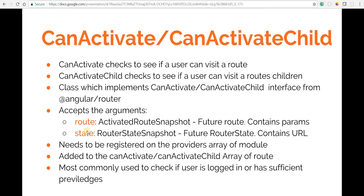The route argument is an ActivatedRouteSnapshot instance, while state is a RouterStateSnapshot. Inside these functions we'll have logic that returns a boolean, or an observable or a promise wrapping a boolean. This boolean decides whether the user can navigate to a particular route, whether it's a parent route or a child route.